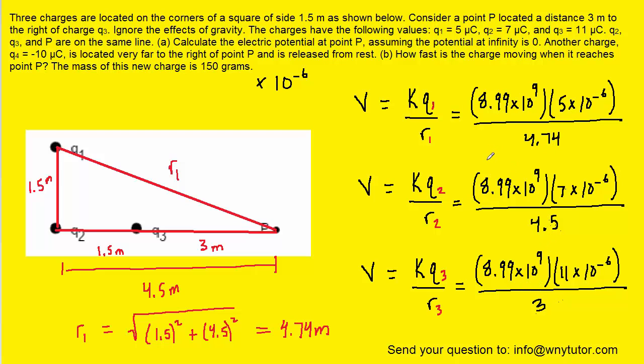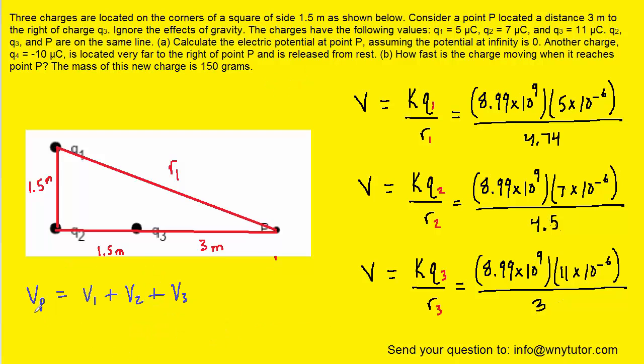Now, the total potential at point P will simply be the algebraic sum of the three potentials shown on the screen. In other words, VP, or the potential at point P, will equal V1 plus V2 plus V3. So we should pick up our calculators and compute the values of V1, V2, and V3. And when you do that, you should get the following values for V1, V2, and V3. And then when you add them together, you should get approximately 56,424 volts. And this would be the total electrical potential at point P. So that is the correct answer to part A.